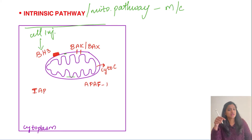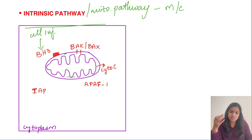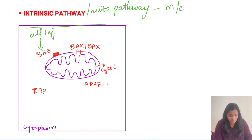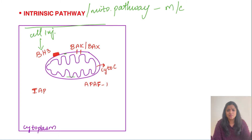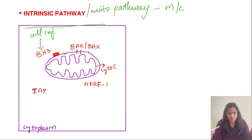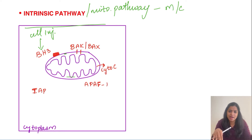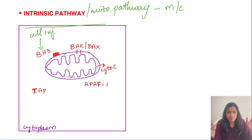Whenever there is cell injury, it is sensed by the BH3-only proteins, which are sensors of cell stress. These include Bim, Bid, Bad, PUMA, and NOXA. They recognize that the cell is injured and change the balance of pro-apoptotic and anti-apoptotic genes — increasing pro-apoptotic genes like Bax and Bak, and decreasing the main anti-apoptotic gene, Bcl-2.